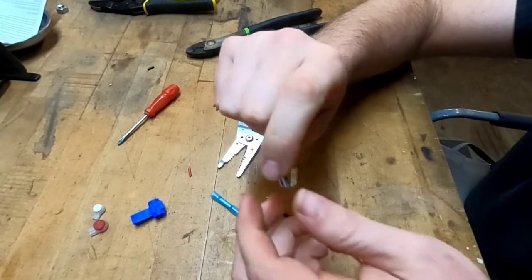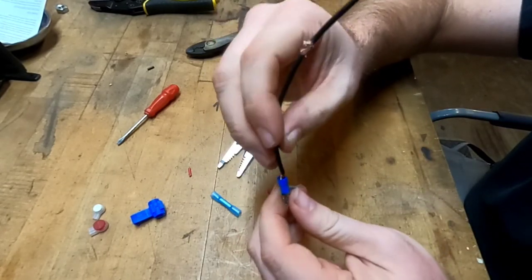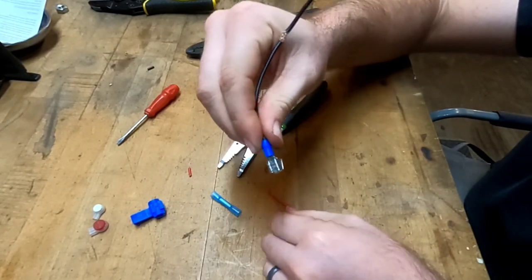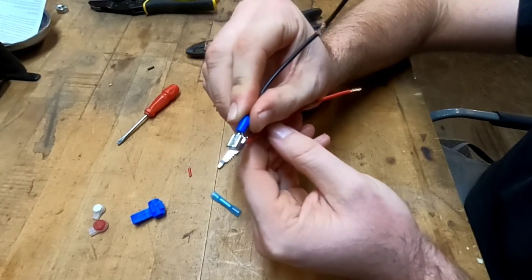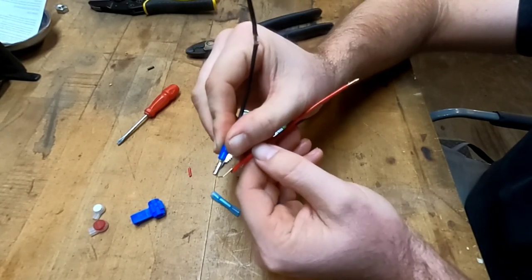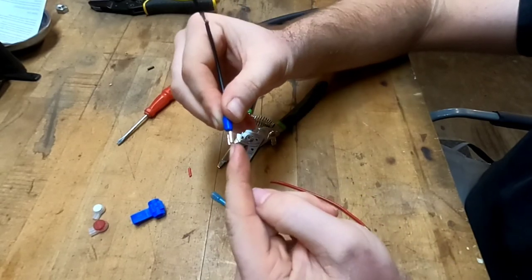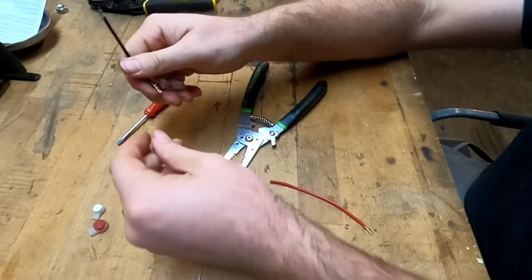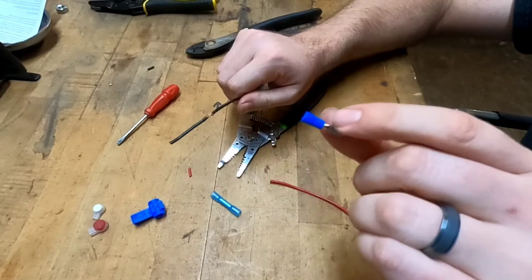But what this allows me to do is I can splice this to one wire, like say, and I can have another wire with a female end and I can put it on this and then connect that to another male side. It just depends. You have options.